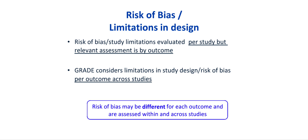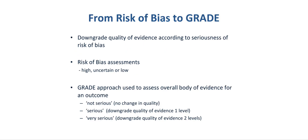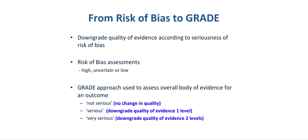The risk of bias or limitations in study design and execution is evaluated per study and across studies, done by outcome. GRADE considers the risk of bias per outcome across studies. The risk of bias may differ for each outcome and is assessed within and across outcomes. The quality of a body of evidence will be downgraded depending on the seriousness of the risk of bias — which can be high, uncertain, or low. In GRADE, these judgments are called not serious, serious, or very serious, with downgrading by one or two levels accordingly.